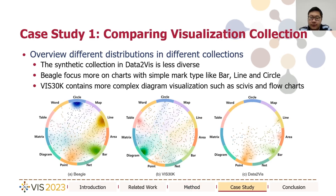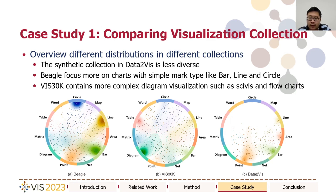Next, we show the usefulness of our method and system with some case studies. The first one is comparing different visualization collections. We use the embedding overview to compare three different collections: the first is Beagle, mostly from web-based visualizations; the second is Vis30K, which is mostly collected from research publications; and the third is the synthetic collections used in AI for Vis models, such as Data to Vis. From the embedding overview, we can immediately see that the synthetic collection in Data to Vis is much less diverse than the other two collections.